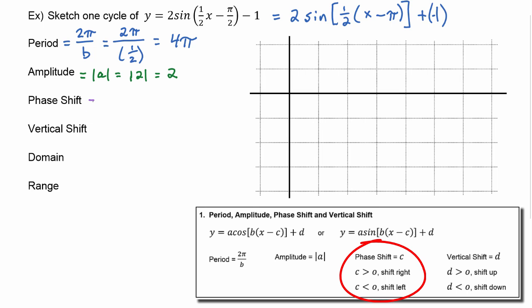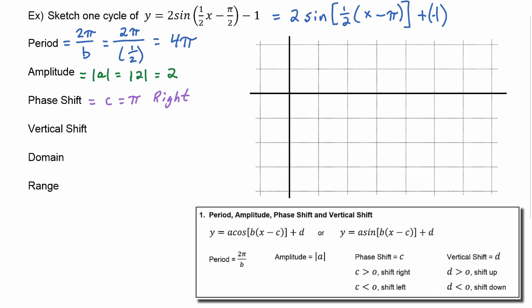The phase shift is equal to c. Using the factored form, c is whatever comes after the minus sign, so c is actually positive pi, which means the shift will be to the right. The vertical shift is d, which we know is negative one, which means it's going to be a shift downward.